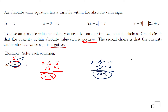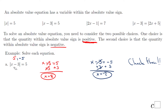You want to check these solutions. In this case, I don't think it's too complicated to check them mentally. You can plug them into the equation. If I take the first one, 8: 8 minus 3 is 5, and absolute value of 5 is 5. You can do the same for the second one, and it does work.